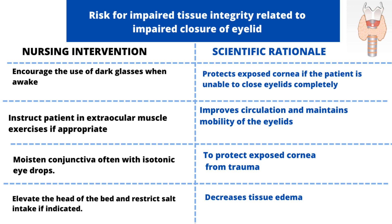The second intervention is to instruct the patient in extra-ocular muscle exercises if they are appropriate. The rationale is that this will improve local circulation and maintain the mobility of the eyelids. The next intervention is to moisten the conjunctiva often with isotonic eye drops, which will help to protect the exposed cornea from trauma.